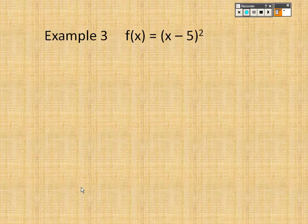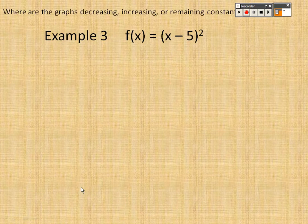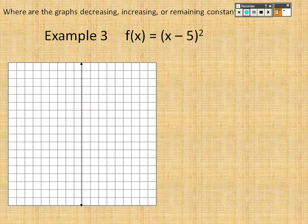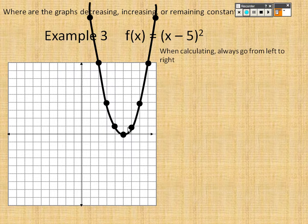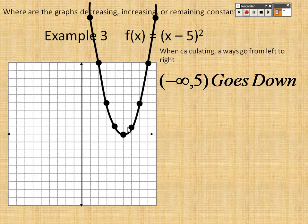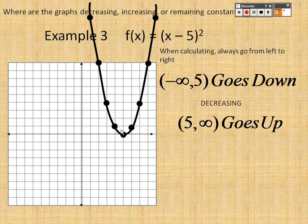So where is the graph decreasing, increasing, or constant? You can graph this on your graphing calculator. From here to here it's going down — that point is at x equals 5 — so from negative infinity to 5 it goes down, meaning it's decreasing. That could even use a squared-off bracket. Then from 5 to infinity it goes up, so it's increasing.